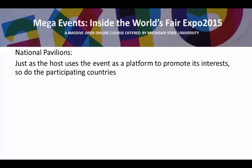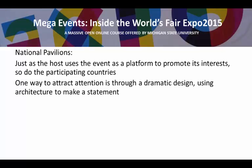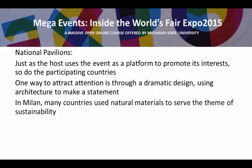The expo itself is a platform to make statements by the organizers, but also each pavilion is a platform for a country to promote its industries, its businesses, and to reach out to the public. One way the public will notice your pavilion is through a dramatic design, and this is a case of architecture being used to make a statement about a country. In Milan, many countries used natural materials to serve the theme of sustainability, so the buildings themselves were statements about how materials could be recycled, reused, or made from renewable materials.